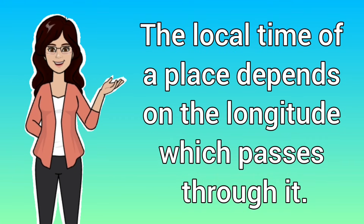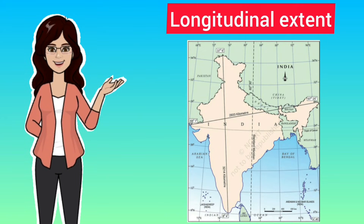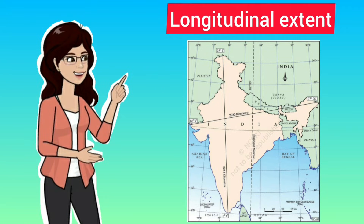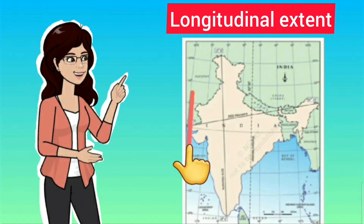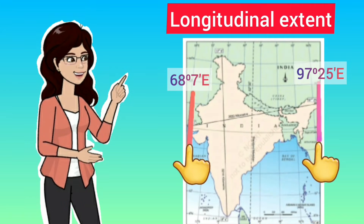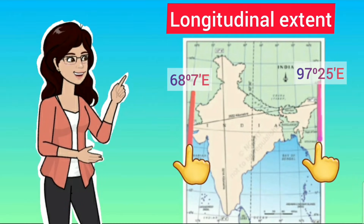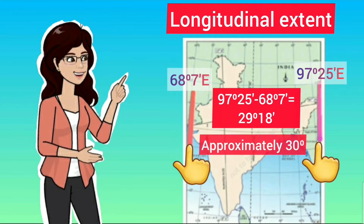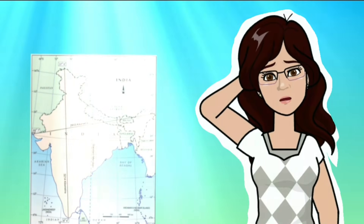The first and most important thing you need to know is that the local time of a place depends on the longitude which passes through it. India's longitudinal extent is 68 degrees 7 minutes east to 97 degrees 25 minutes east. When you calculate, you will find that there is a difference of approximately 30 degrees between these two longitudes.